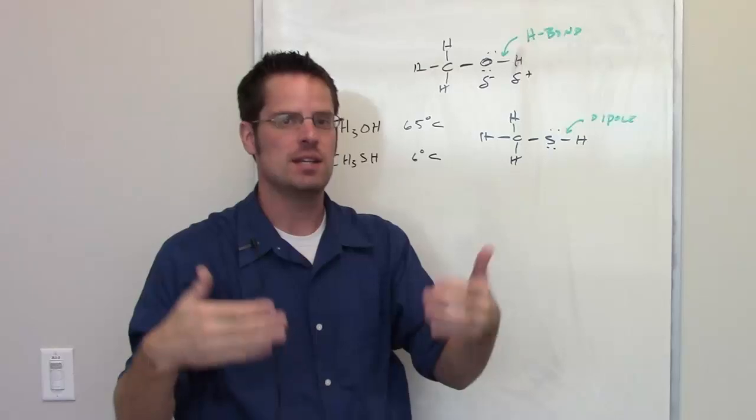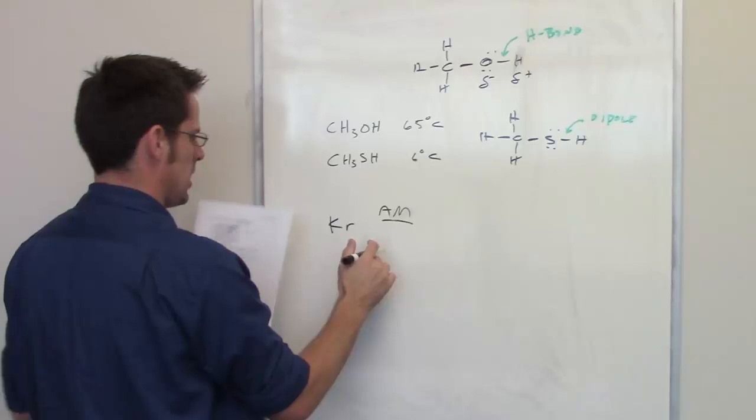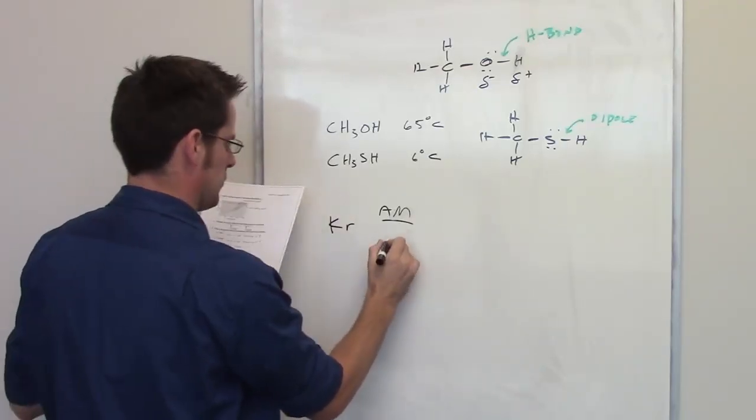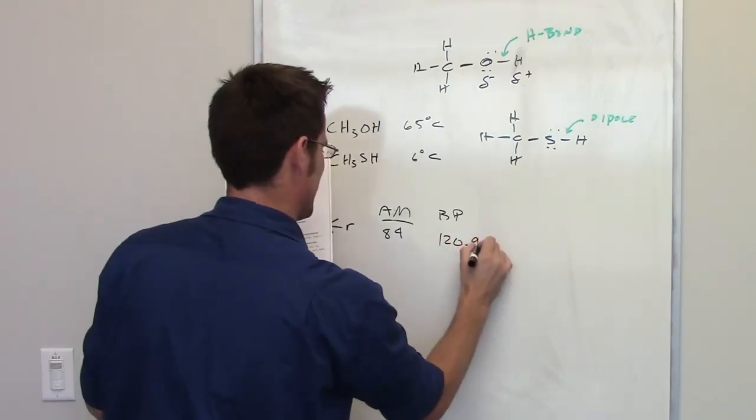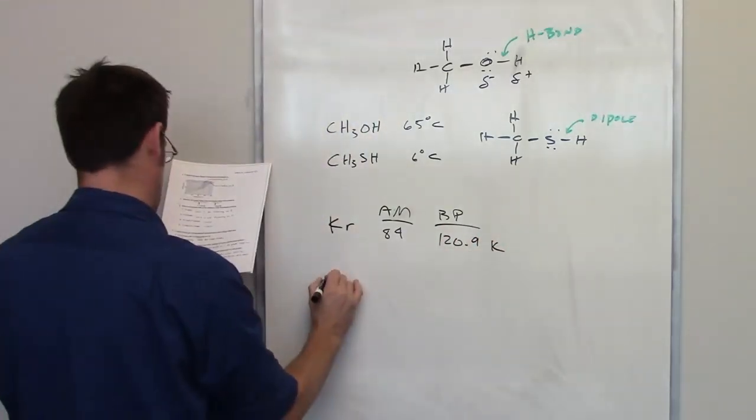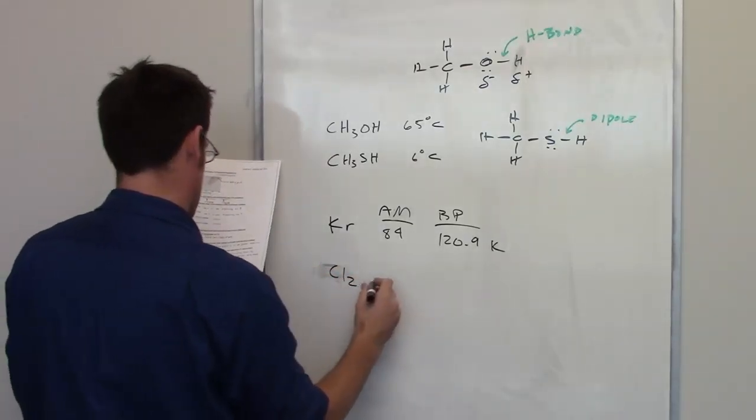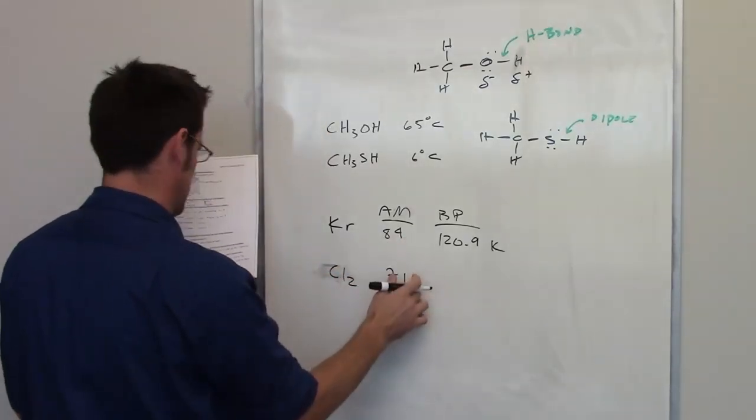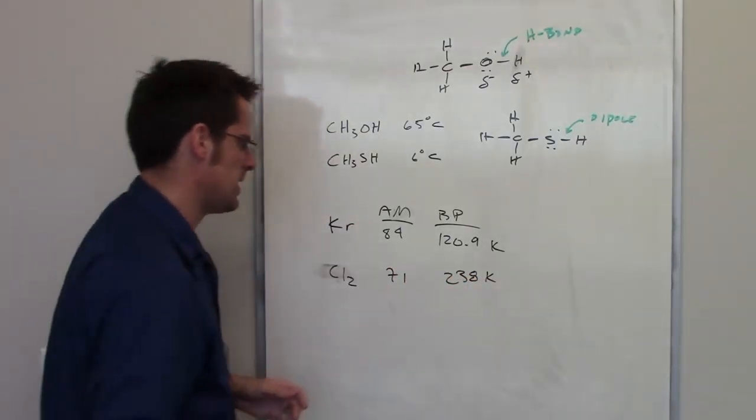The second question shows that krypton has an atomic mass of 84 and has a boiling point of 120.9 kelvins, while chlorine gas has a molecular weight that is a little bit less, 71, but boils at a much higher temperature. What accounts for that?